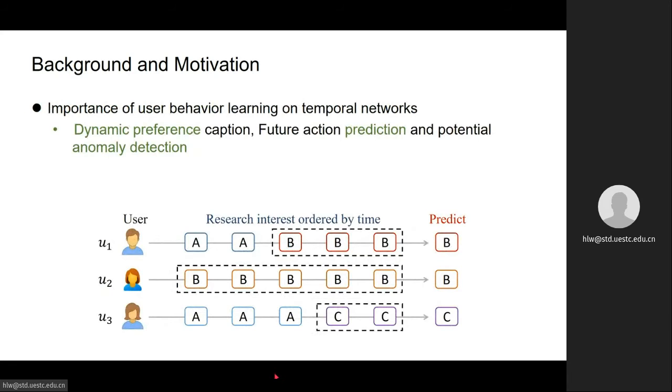Learning dynamic user behavior in temporal networks is of significant importance. If we treat nodes in the network as users, then user behavior learning and embedding allows us to capture users' dynamic preference, predict users' future action, and perform potential anomaly detection.